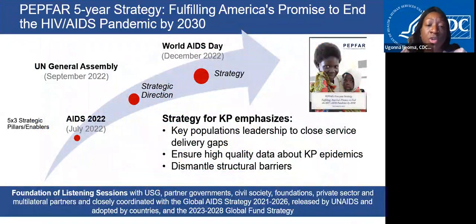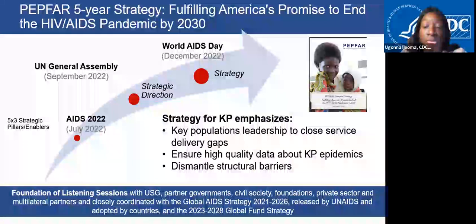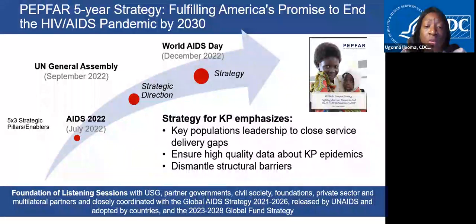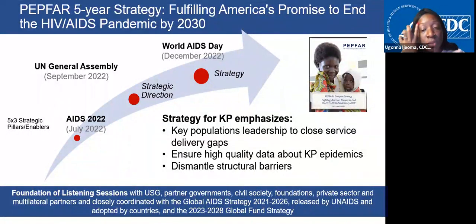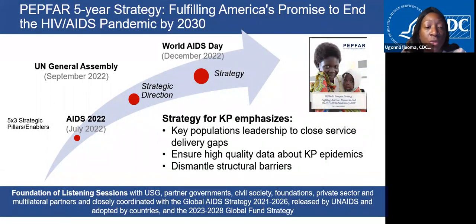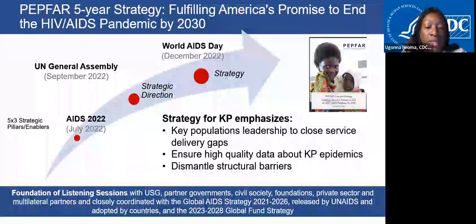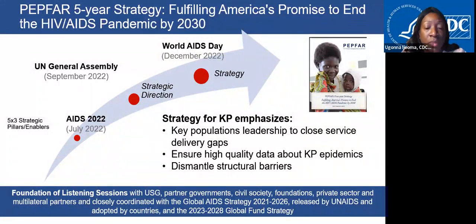Within our strategy, core points for KPs include: KP leadership is needed to close service delivery gaps; high-quality data is needed to understand gaps in the KP epidemic; and structural barriers need to be dismantled. PEPFAR's new strategy was released December 1st, World AIDS Day, based on listening sessions the ambassador and his team had with many stakeholders, and is coordinated with UNAIDS and the Global Fund.